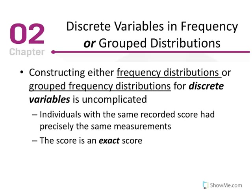When constructing a group frequency distribution using discrete variables — meaning usually whole numbers or named categories that cannot be divided into smaller proportions — it's viewed as uncomplicated because individuals with the same recorded score had precisely the same measurements. The value of 5 individuals in a household is always going to be 5; it's never going to be a fraction between 4 and 5. Since discrete variables cannot be divided into smaller values, they don't require real limits.